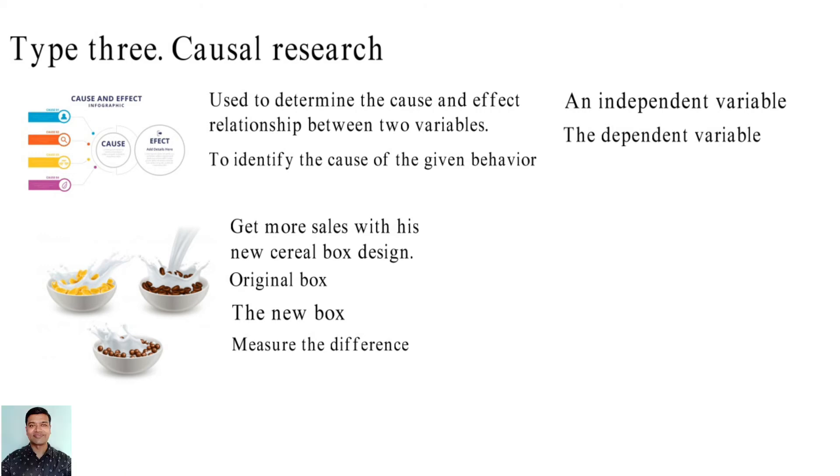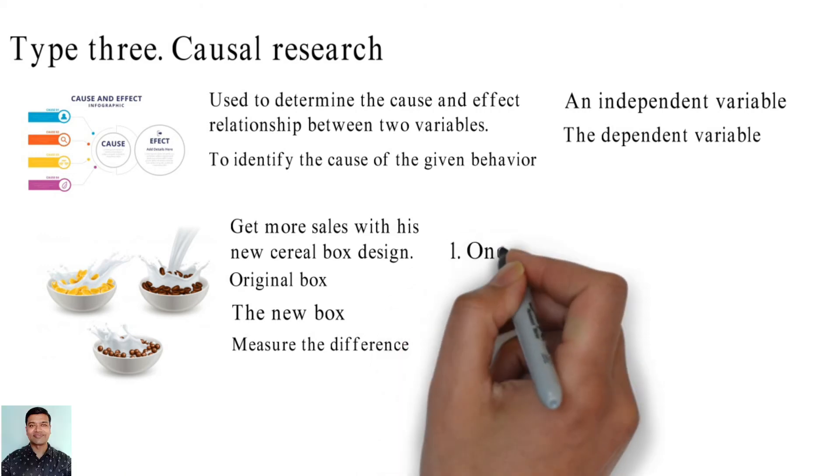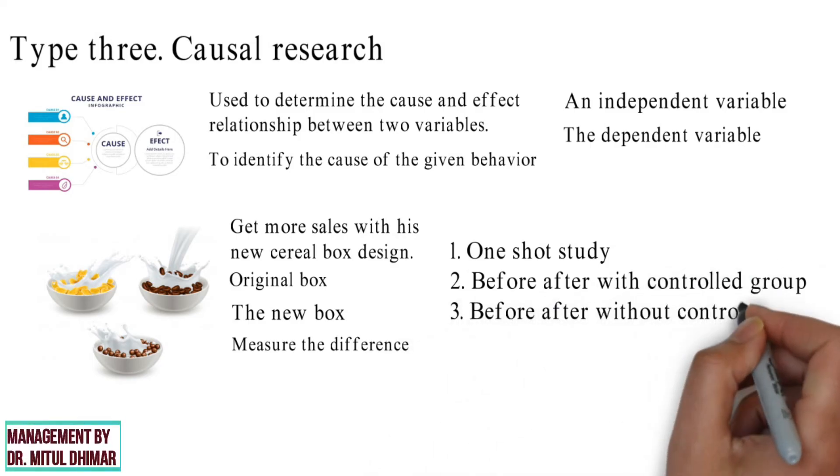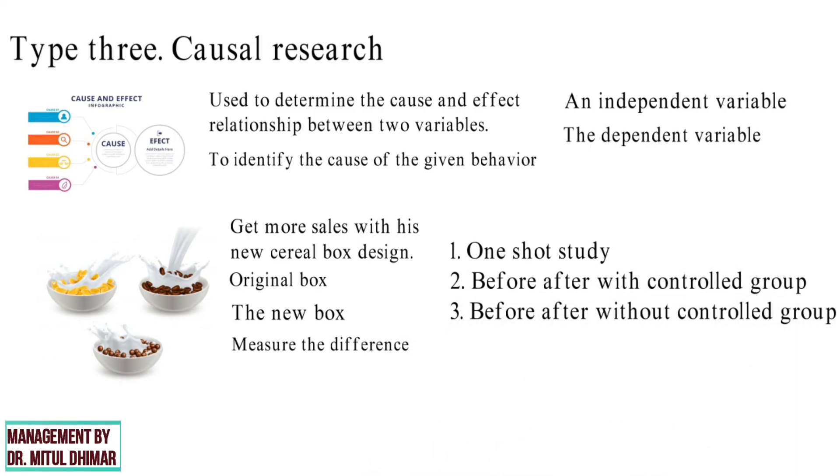Following are three different ways through which we can do causal research. One shot study. Before after with control group. Before after without control group.